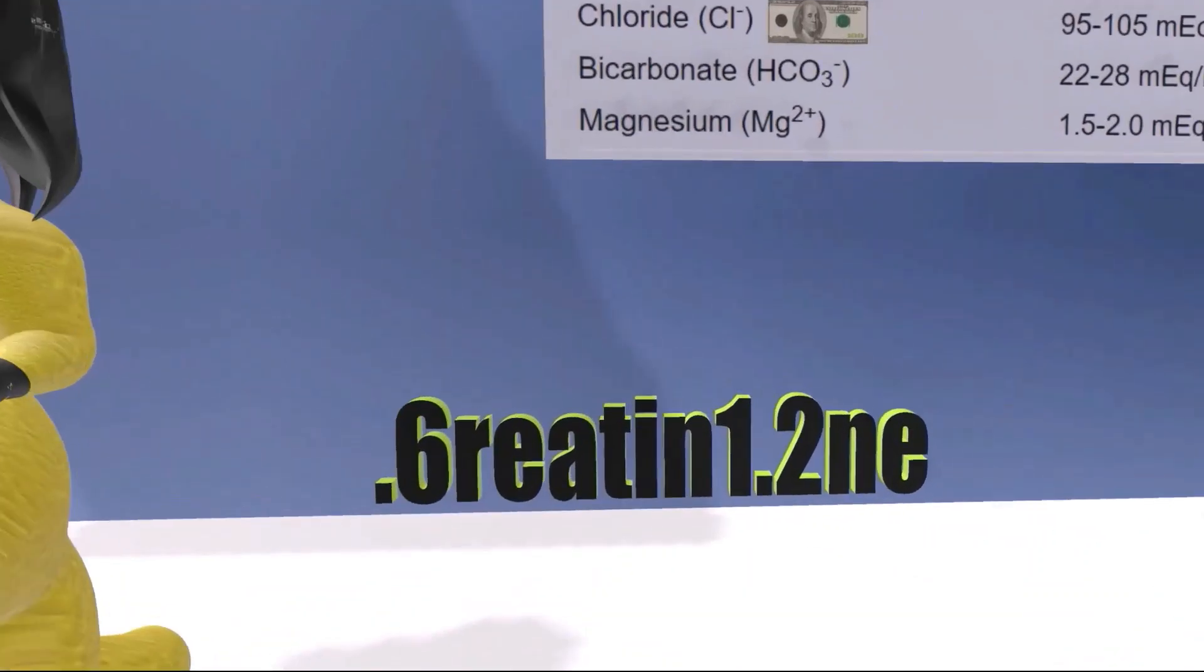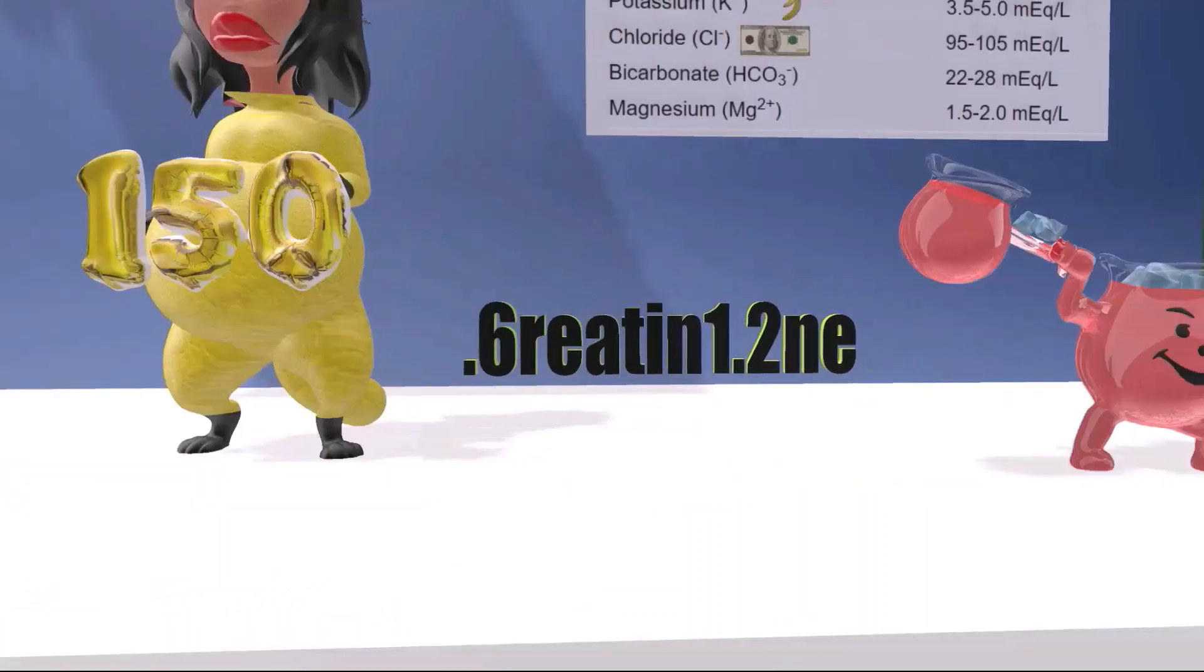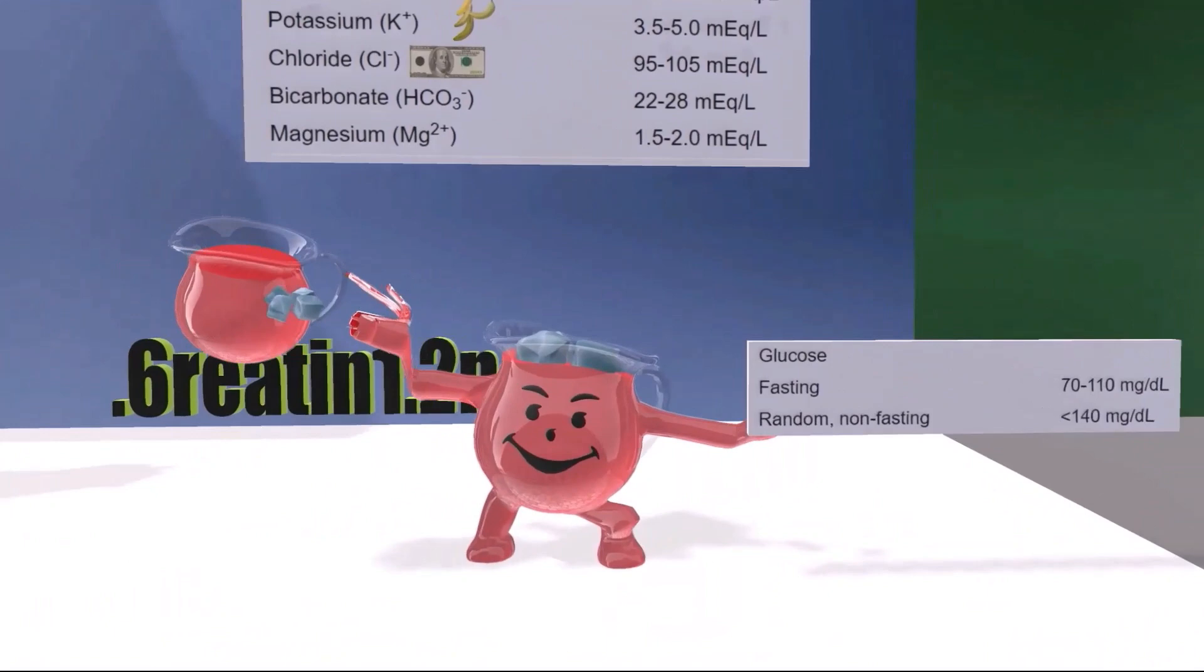And behind her we see this creatinine sign. Someone apparently doesn't know how to spell creatinine, but this works out well because the 0.6 over here reminds us of the lower range of creatinine which is 0.6, and the 1.2 reminds us of 1.2, that creatinine levels should be between 0.6 and 1.2 milligrams per deciliter.